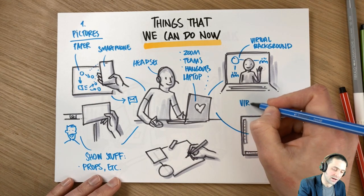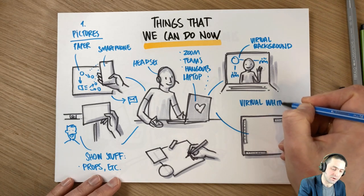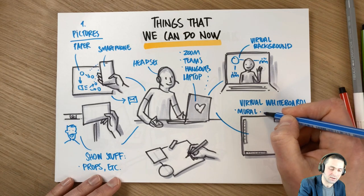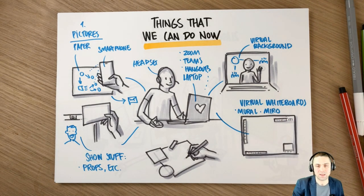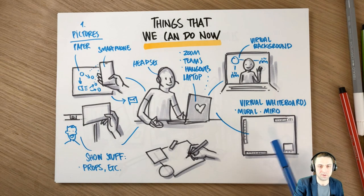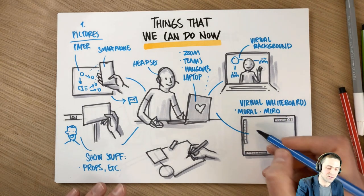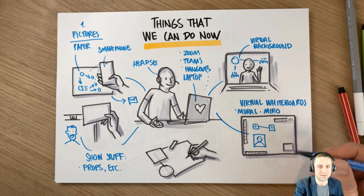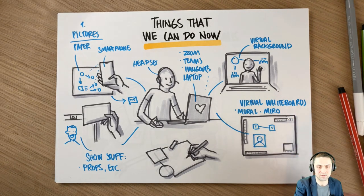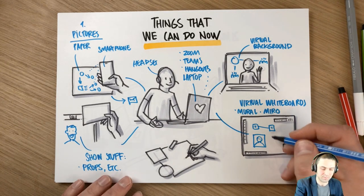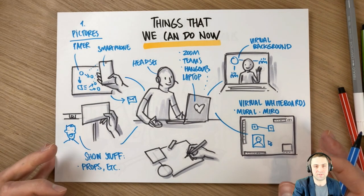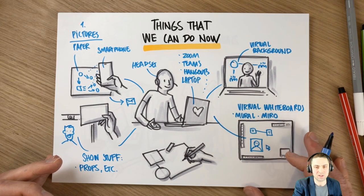Next up: all sorts of virtual whiteboards — applications like Miro and Mural. If you haven't used those before, they are collaborative tools that allow people to log into the same virtual space and start creating virtual sticky notes, connect them together, upload pictures, and collaborate concurrently. People can see each other's cursors moving around — it's not like saving and sending a document back and forth.